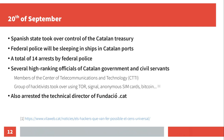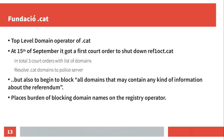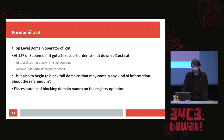Apart from that, the technical director of fundacio.cat was also arrested. Fundacio.cat is a private foundation and is the top-level domain operator of the .cat domain. They received a court order on the 15th of September to shut down ref1oct.cat, and in total they received three court orders each time with a larger list of domains. The court order also included that they should resolve the mentioned .cat domains to a police server. But if you know how DNS works, the top-level domain name server only pinpoints you to an authoritative domain server — so it seems the police didn't really understand how DNS works.